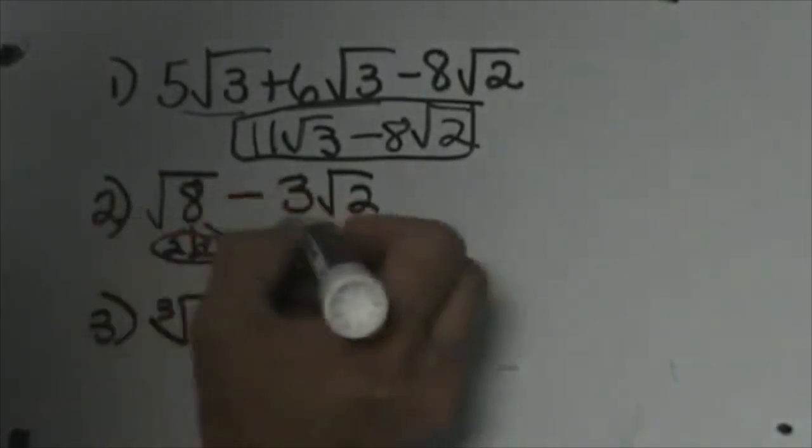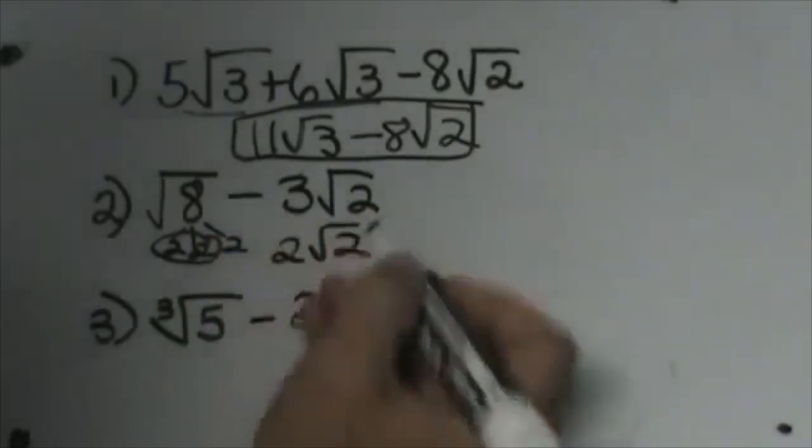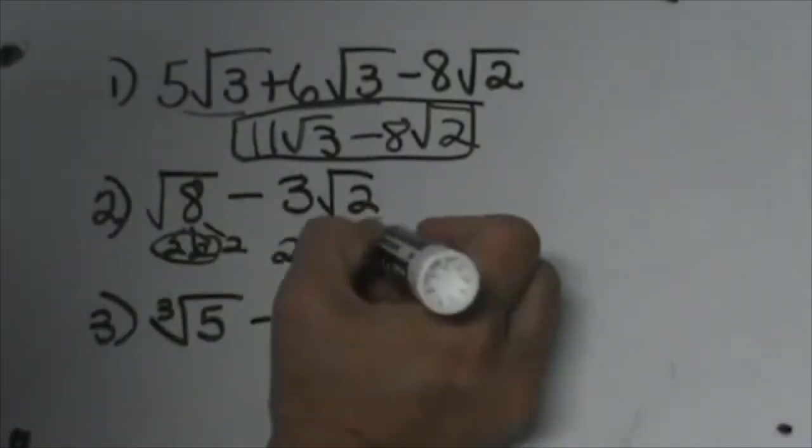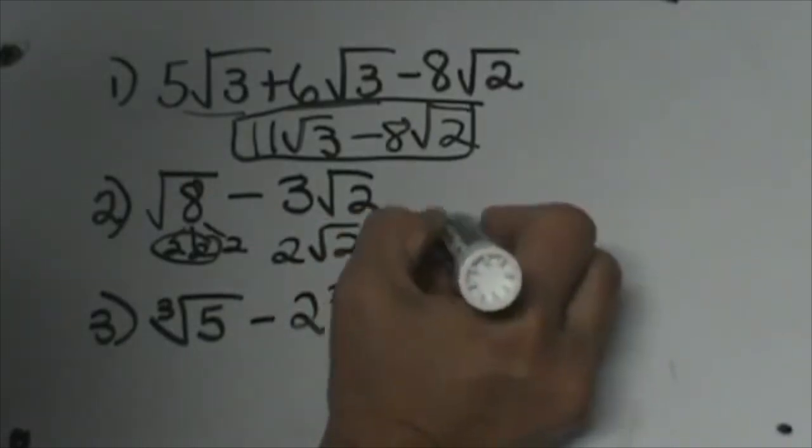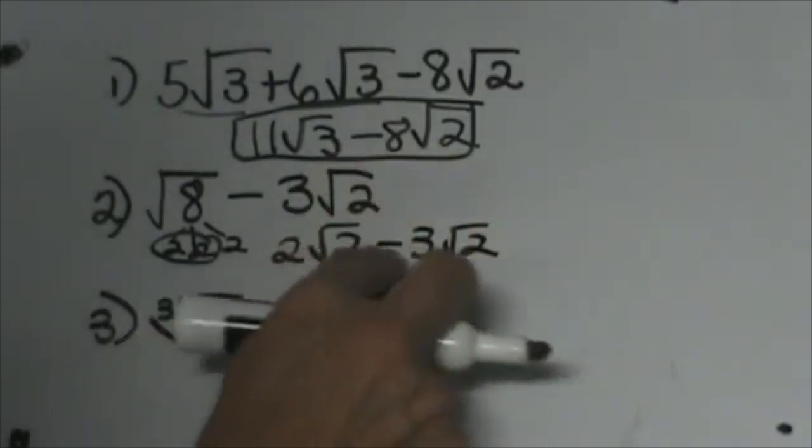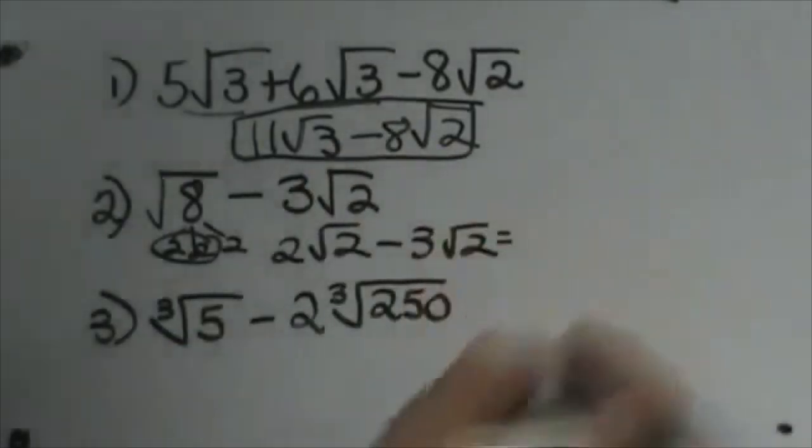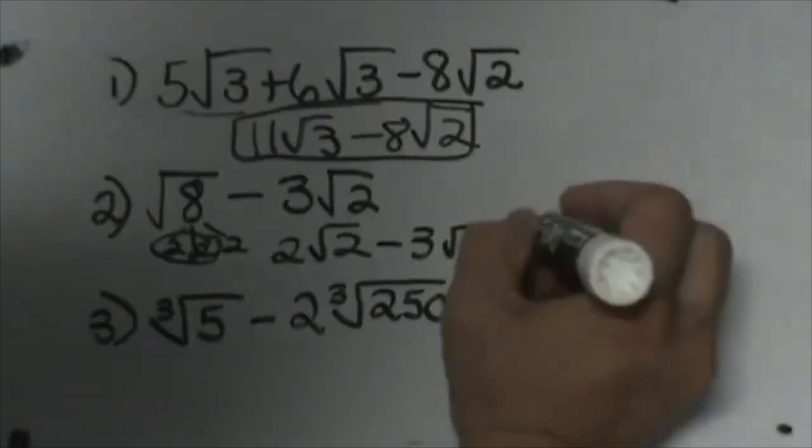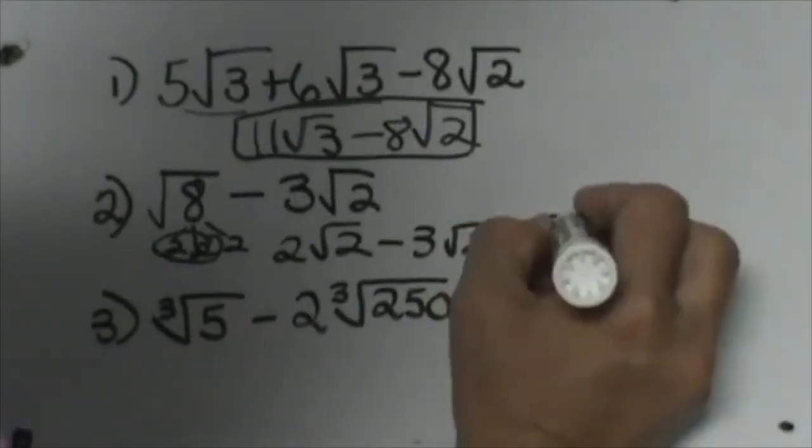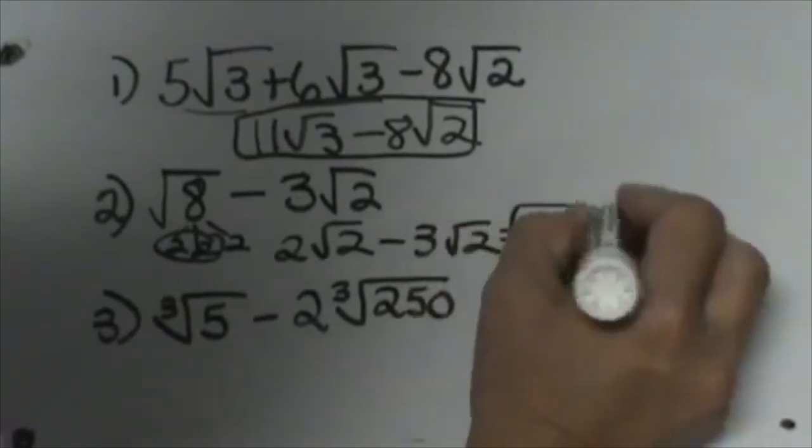The square root of 8 becomes 2√2. We can subtract from it 3√2, so 2√2 - 3√2 ends up being negative 1√2, or we just write -√2. That would be our answer.